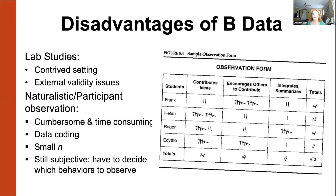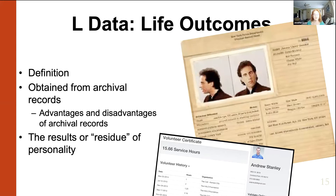Sometimes weird things happen in the lab and we don't know if that's the way they'd really respond in the outside world. That finishes behavioral data. Let's go to L data or life outcome data. Life outcome data is really the residue that you leave behind in the world. To be true life outcome data, it has to be objective — recorded not by you, but by somebody else like your school, government, or police department. Examples include police reports, volunteer hours, GPA, and transcripts.